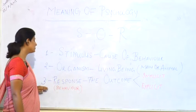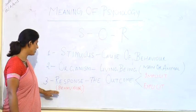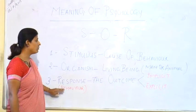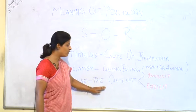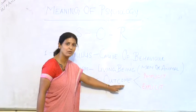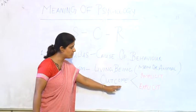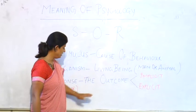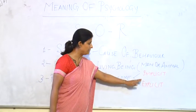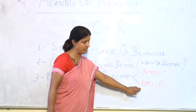The third thing is most important — that is Response, or we say that is behavior. The causes and the result is called response, the outcome. The outcome is called behavior, and behavior is of two types: implicit behavior and explicit behavior.